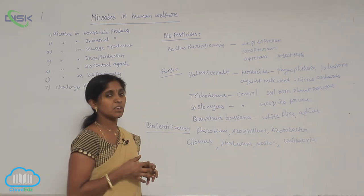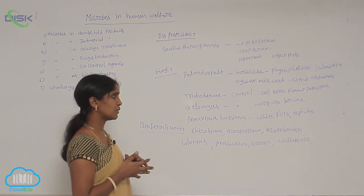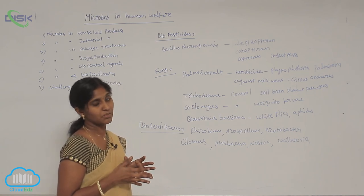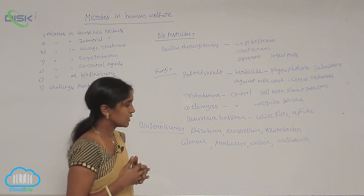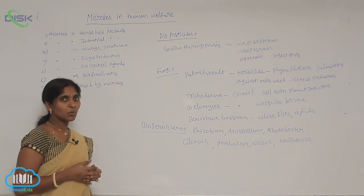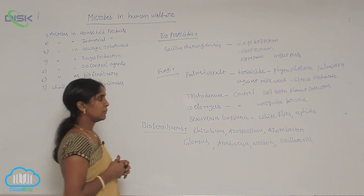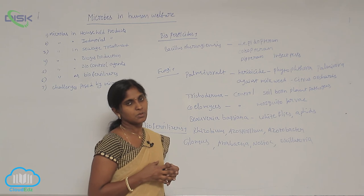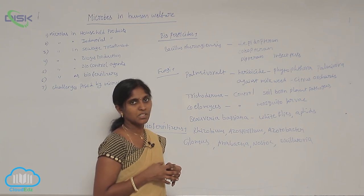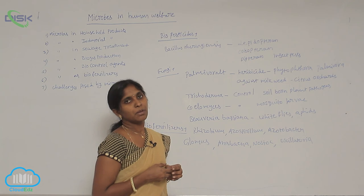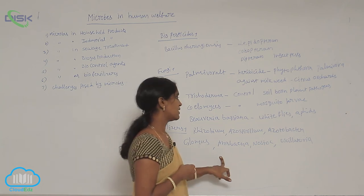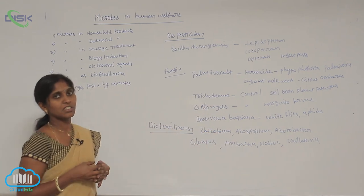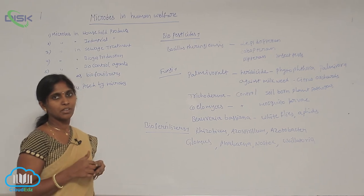Azospirillum is a free-living bacterium, and Acetobacter is also a free-living bacterium. Both fix atmospheric nitrogen into the soil. Glomus is a mycorrhiza that also helps fix nitrogen. Anabaena, Nostoc, and Oscillatoria are cyanobacteria — blue-green algae — and are ideal bio-fertilizer agents, fixing atmospheric nitrogen into the soil and improving soil fertility.